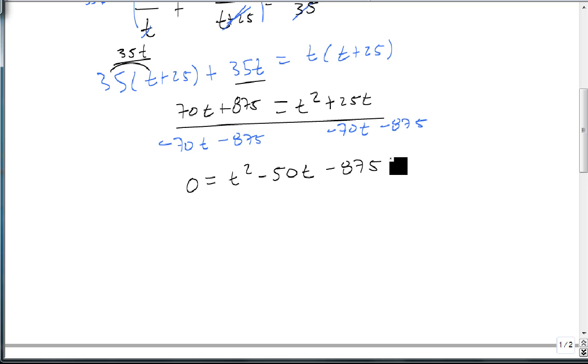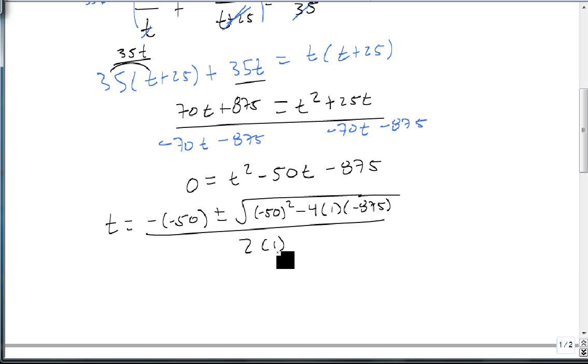Well, we can try and factor this, or we can use the quadratic formula. And since I don't see it factoring very quickly, I'm going to jump straight to the formula. So we're going to let t equal negative b, which is minus negative 50, plus or minus the square root of negative 50 squared minus 4 times 1 times negative 875, all over 2 times 1.